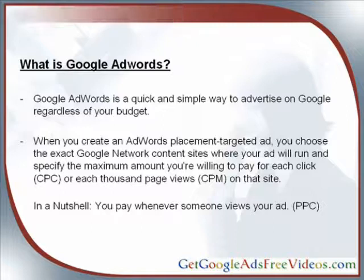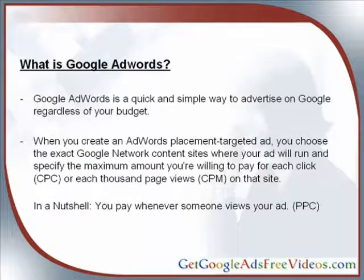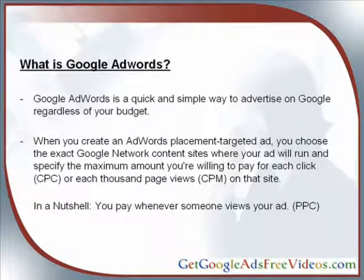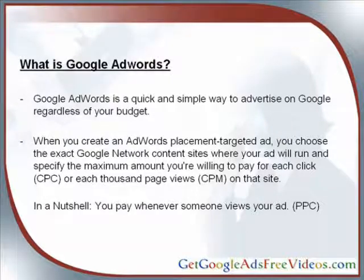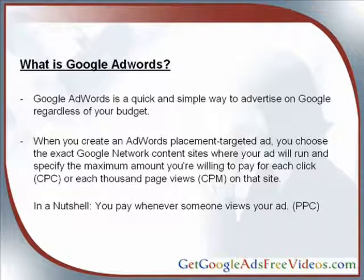When you create an AdWords placement targeted ad, you choose the exact Google Network content sites where your ads will run and specify the maximum amount you're willing to pay for each click that's generated. It's also known as CPC, cost per click, or each thousand page views, CPM, on that site. You are only going to have to pay Google when someone clicks on your ad — that's an actual physical action. And that's also known in the industry as PPC, pay per click.